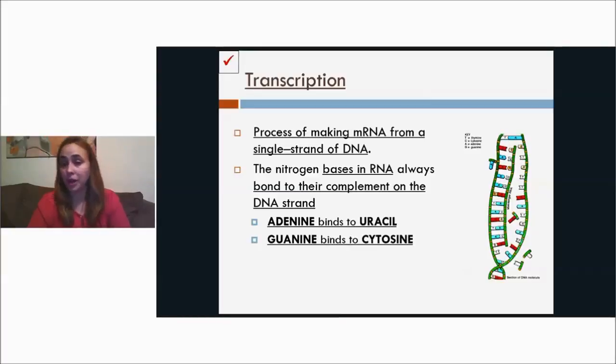So adenine would bond to uracil, and guanine binds to cytosine. Remember we said that uracil replaces thymine in the RNA strand. Now, if you have thymine on the DNA strand, it bonds to adenine still, T to A, but A would bond to uracil, A to U, and G always binds to C.